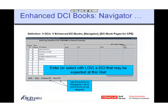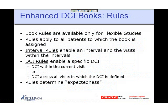Book rules are available only for flexible studies and apply to all patients assigned that book. It's generally expected that you create one book for the study and all patients are assigned to it. That book contains rules defining which visits and forms will actually be expected. Interval rules basically enable or disable an entire interval — a whole set of forms — depending on when the trigger executes.